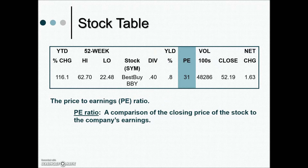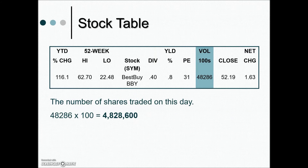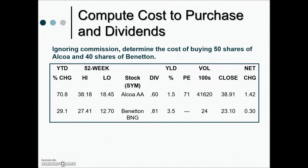PE is short for price-to-earnings ratio — a comparison of the closing price of the stock to the company's earnings. We'll take a closer look at this later in the section. The stock table also generally shows the volume, meaning the number of shares traded during the day. During the day there were nearly five million shares traded in the course of stock market activity.